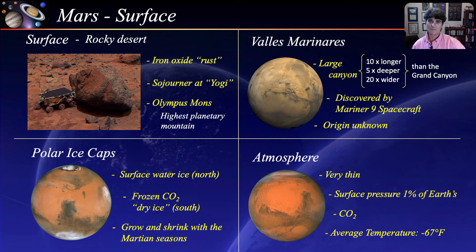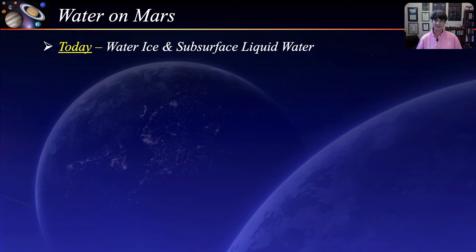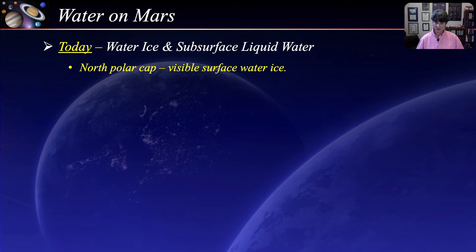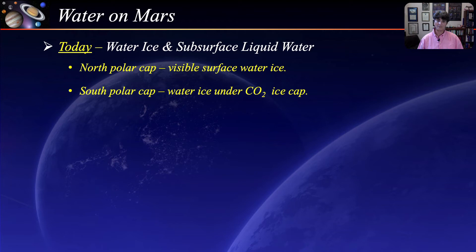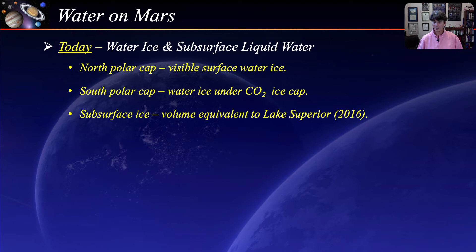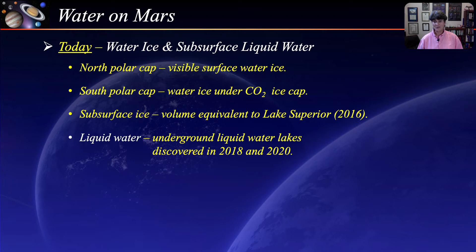The question of the presence of water on Mars, both past and present, has always been of great interest. The present form of water on Mars is either ice or the recently discovered subsurface liquid water. The only place where water ice is visible at the surface is at the North Polar Cap, and there is abundant water ice beneath the carbon dioxide ice cap at the South Polar Cap. In 2016, NASA reported finding a large area of underground ice equivalent in volume to Lake Superior. In July of 2018, the European Space Agency announced the discovery of an underground liquid water lake near Mars' southern ice cap, and in 2020 additional underground lakes were discovered.